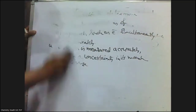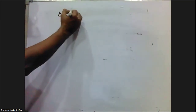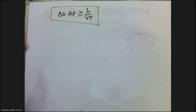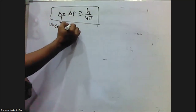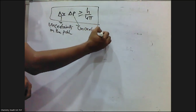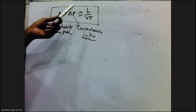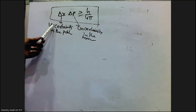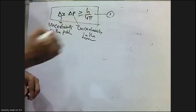Mathematically, Heisenberg's uncertainty principle is expressed as: Δx · Δp ≥ h/4π. This is the mathematical form of Heisenberg's uncertainty principle, where Δx is the uncertainty in position, Δp is the uncertainty in momentum, h is Planck's constant, and π is 22/7.